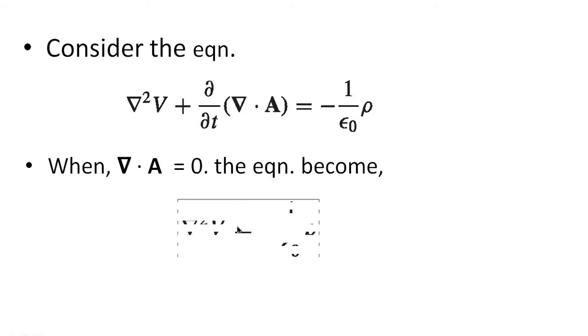So the equation becomes del square V equal to minus rho by epsilon 0. This is the Poisson equation.